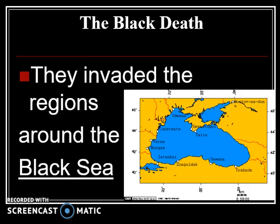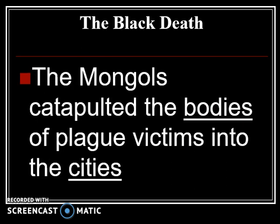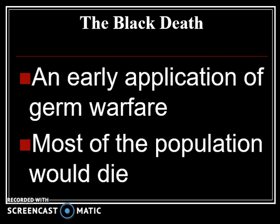The Mongols spread it west and invaded the regions around the Black Sea, which were huge trading cities with merchants buying goods, trading goods, and traveling in and out. What the Mongols would do is go to the edges of the cities — there were walls — and they would take bodies of plague victims and catapult them into the cities. You could get infected just by breathing the air or by touching the bodies. This is an early application of germ warfare: the use of a biological weapon to infect and kill enemies on purpose.